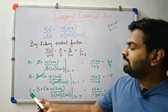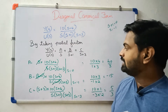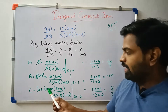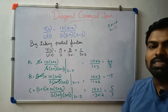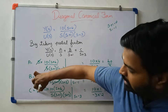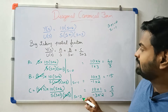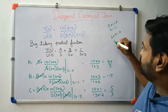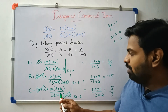Now let's find C. C is found by multiplying (s plus 3) into 10(s+4) by s(s+1)(s+3). The (s plus 3) terms cancel. S is equal to minus 3. We substitute that value to get C.